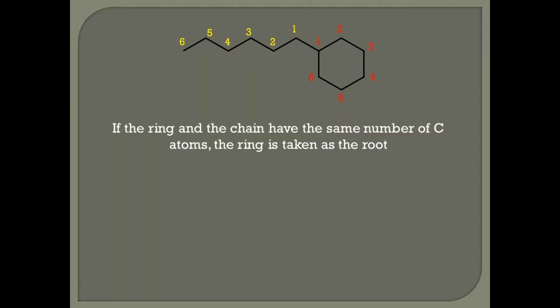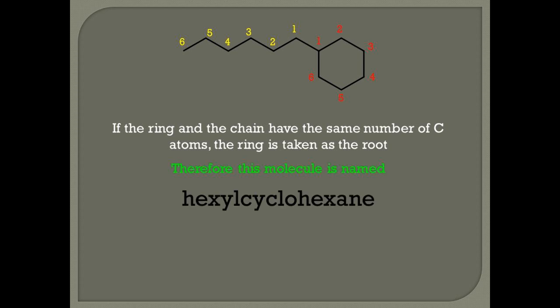Rule 6. If the ring and the chain have the same number of carbon atoms, the ring is taken as the root. Therefore, this molecule is named hexylcyclohexane and not 1-cyclohexylhexane.